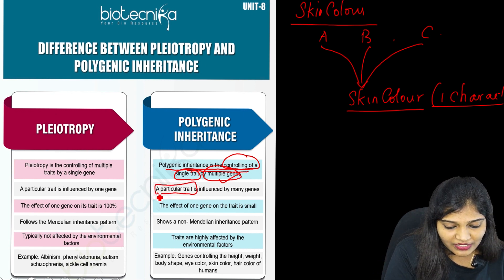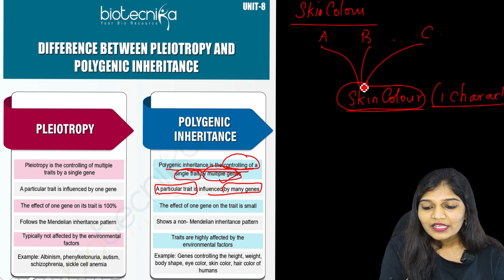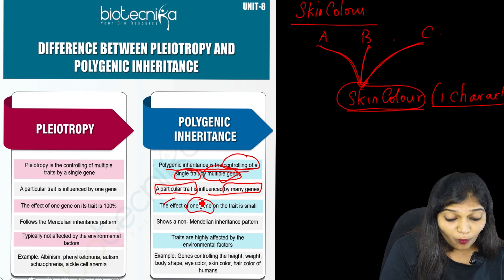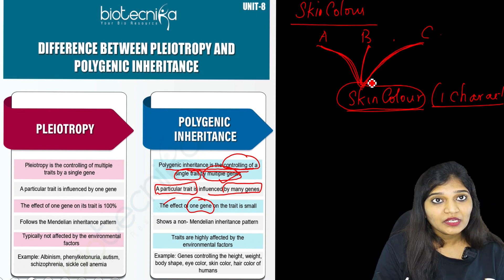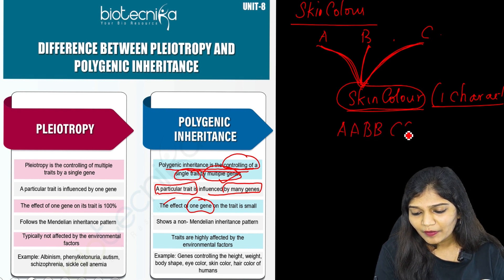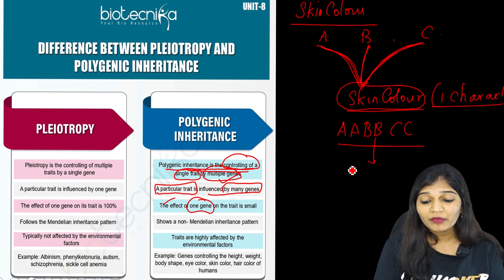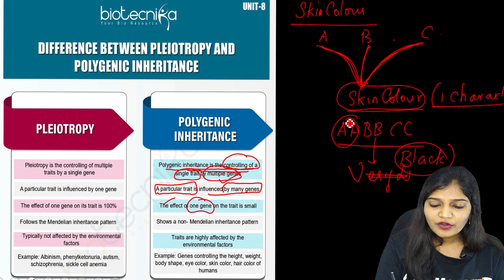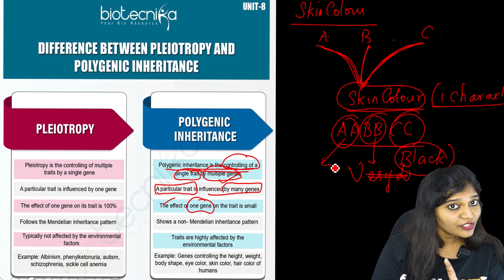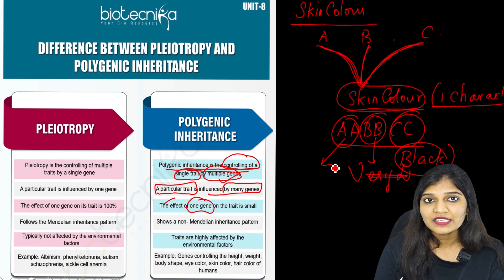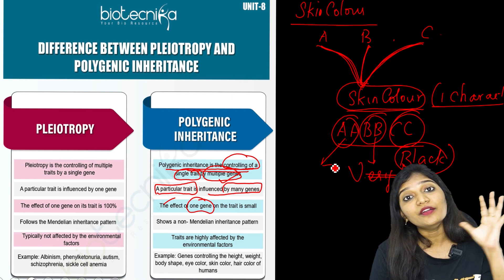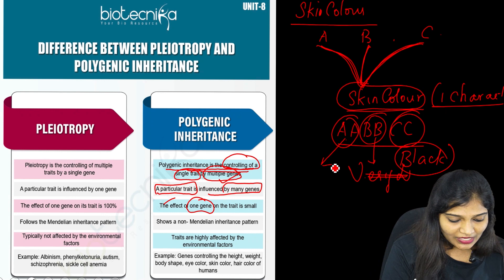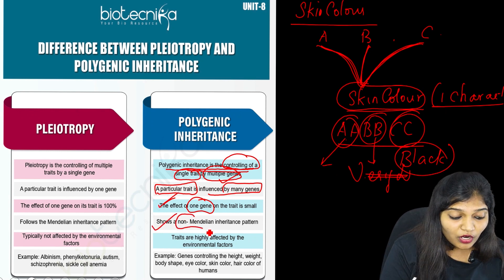A particular trait in polygenic inheritance is influenced by many genes — skin color is influenced by A, B, and C genes. The effect of one gene on the trait is very small. For example, if all three genes are dominant (AA, BB, CC), the skin will be very dark or black, but we do not know the exact contribution of each gene. So the effect of one gene is relatively small — unlike pleiotropy where one gene shows 100% effect. Polygenic inheritance also shows a non-Mendelian inheritance pattern.